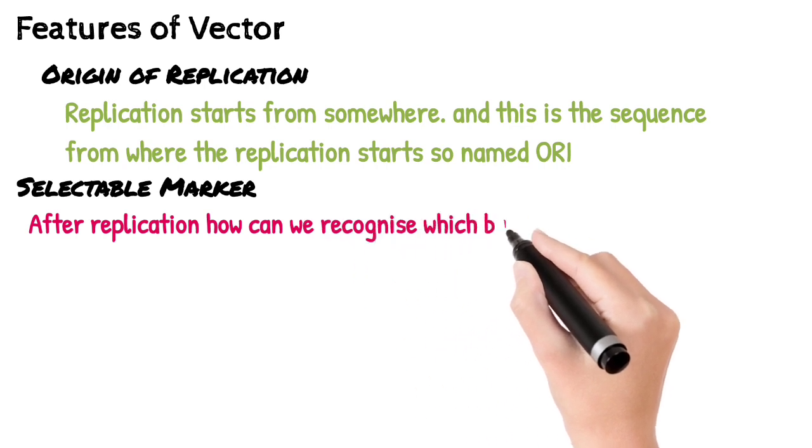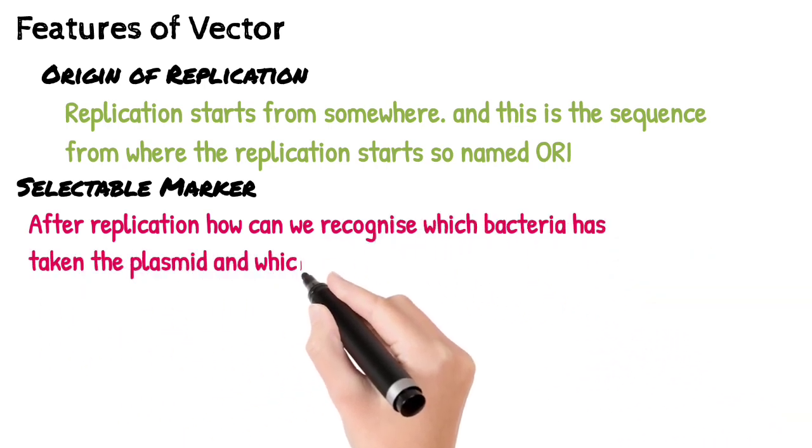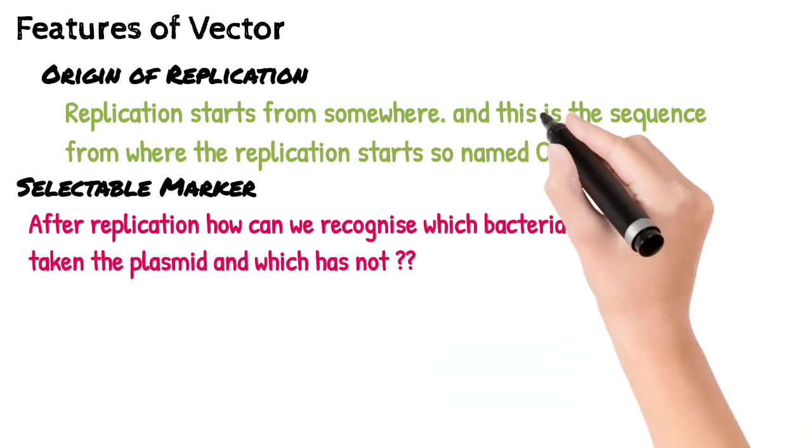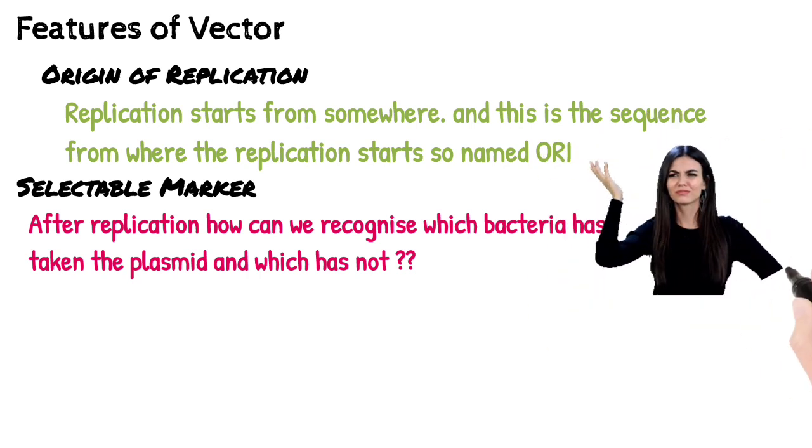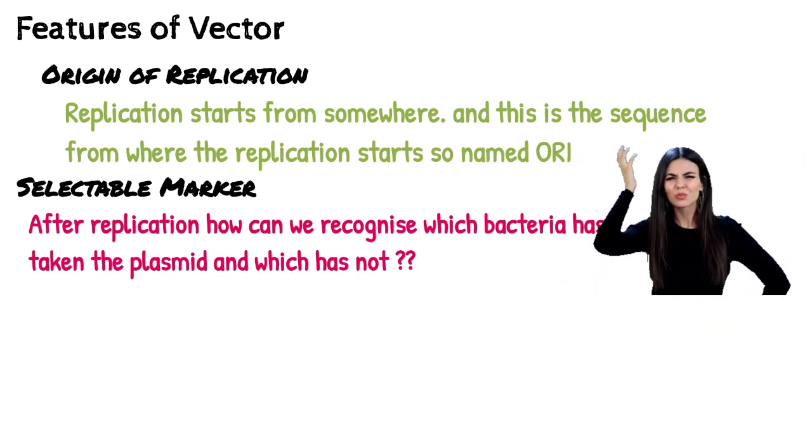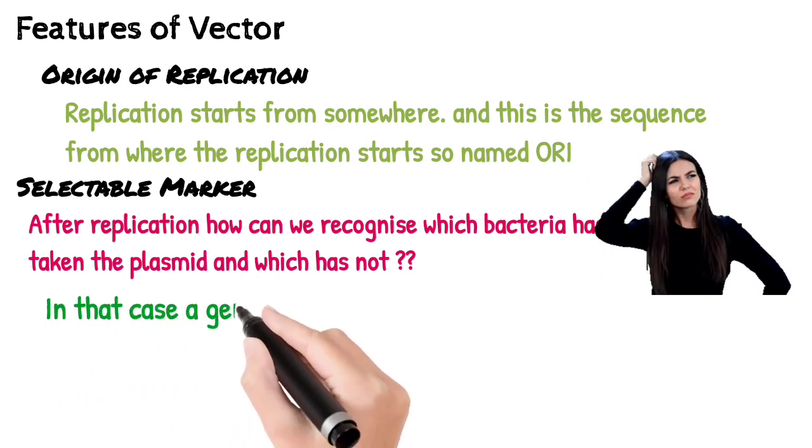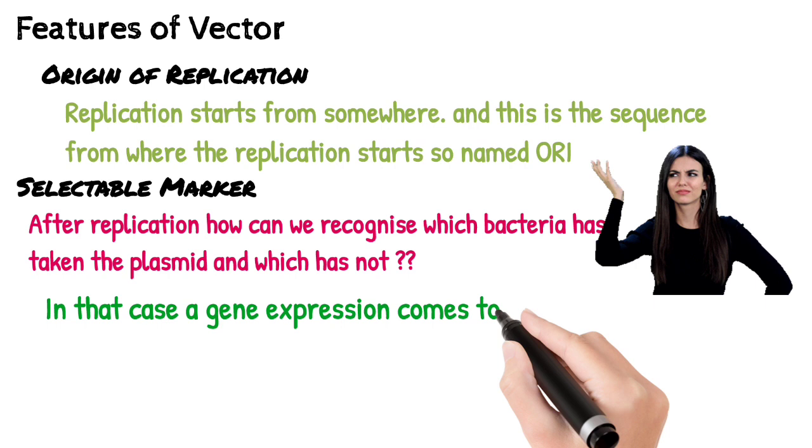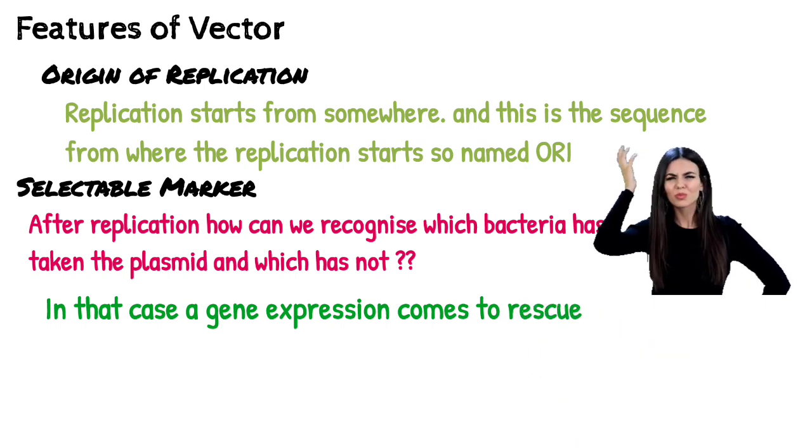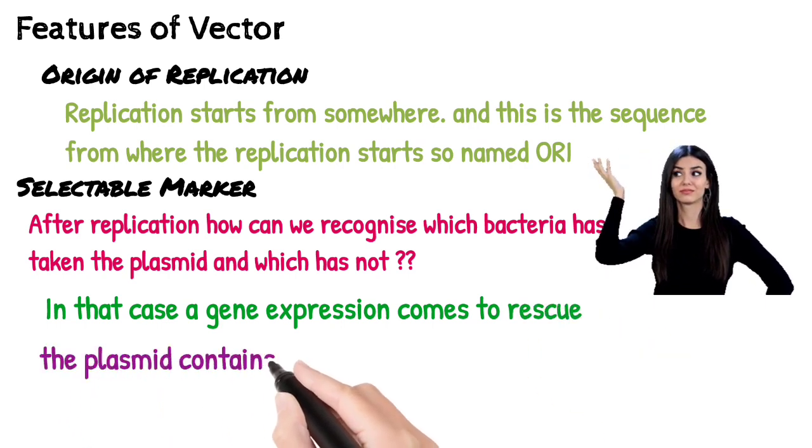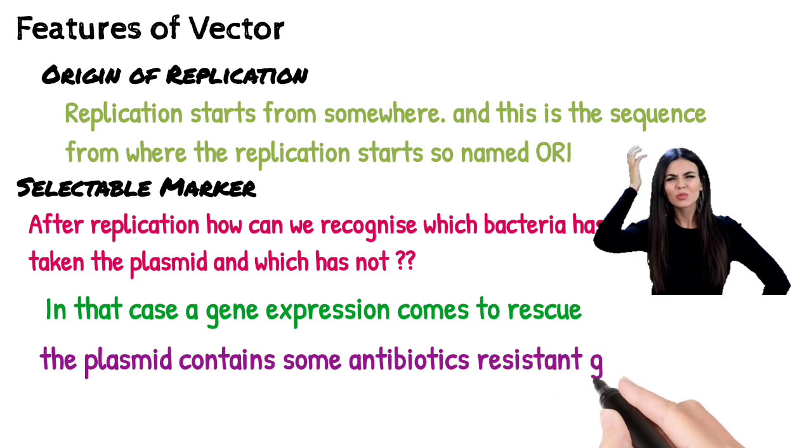Now selectable marker. After replication, how can you recognize which bacteria has taken the plasmid and which has not? Very confusing, right? So in that moment, gene expression comes to rescue. Yes, the plasmid contains some antibiotic resistant gene.